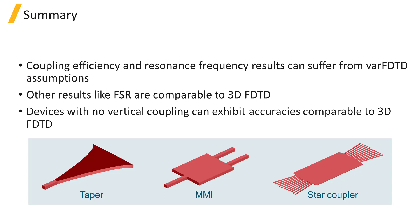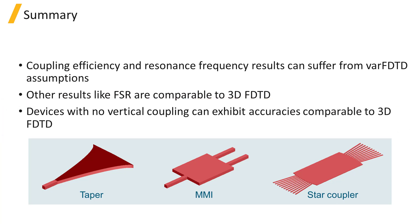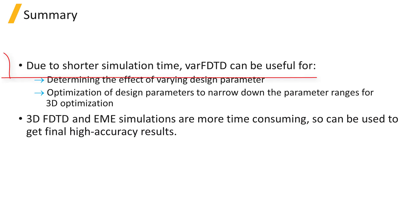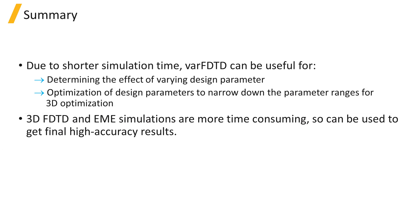For planar devices that don't include any components that introduce loss in the vertical direction — for example, ridge waveguide tapers, MMIs, or star couplers for arrayed waveguide gratings — the simulation accuracy is much closer between VARFDTD and 3D FDTD. Due to the lower simulation time, VARFDTD can be useful for determining the effect of varying specific design parameters and for optimization by running many simulations to narrow down the range of parameters which give optimal device performance. 3D FDTD simulations or EME simulations, which are more time consuming, can then be used to verify the results and get final high-accuracy results.